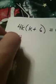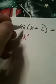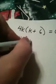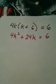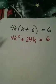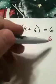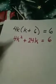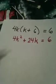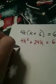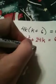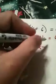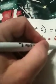4k times k is 4k squared. 4k times 6 is a positive 24k, and this is equal to 6. Now, I need this side to say 0 because I need this to be in standard form, so we're going to subtract 6 from both sides of the equation.